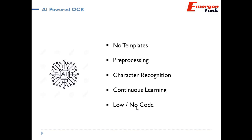Low-code and no-code essentially mean that AI-powered OCR is empowering business users to extract data without any coding knowledge, and it happens very quickly — in a day you can probably configure 10 to 15 templates. Last but not least, it does classification by default, meaning it tags labels and categorizes documents depending on the different document types.